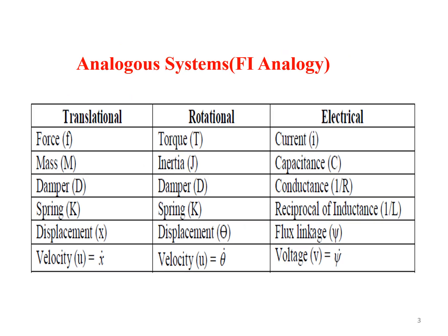Now let's look at the table showing the analogous system using FI analogy. In the first column translational elements are given, in the second column rotational elements are given, followed by electrical elements in FI analogy form. In the translational system, force is considered to be equivalent to current — that is why it is termed as force current analogy, shortly called FI analogy. Mass is considered as equivalent to capacitance, and damper coefficient D or B is considered as equal to conductance, represented as 1/R. Spring coefficient K is equivalent to the reciprocal of inductance, that is 1/L. Displacement X is considered as equivalent to flux, and velocity is considered as equivalent to voltage.